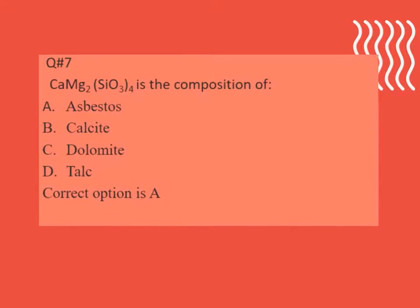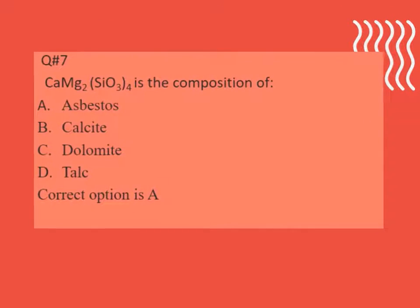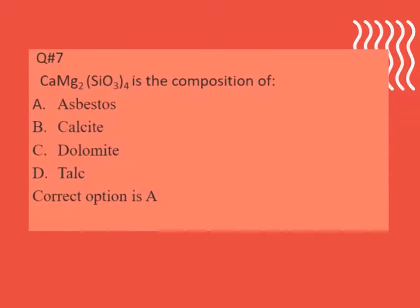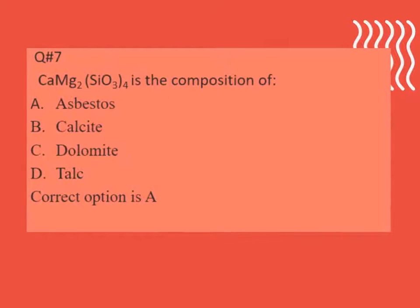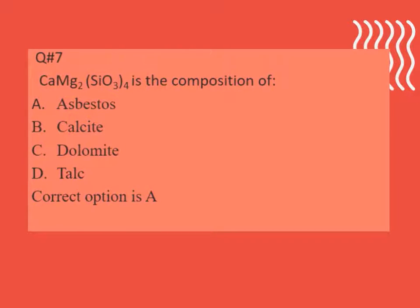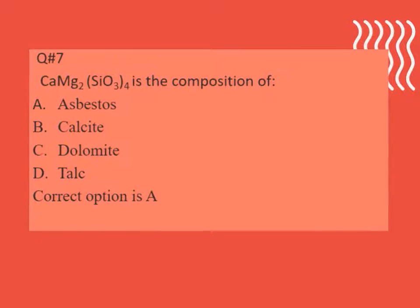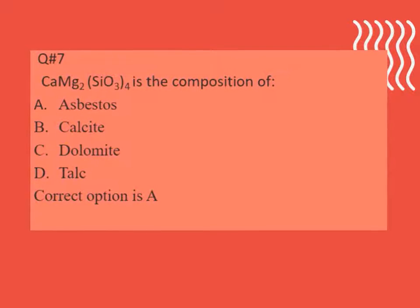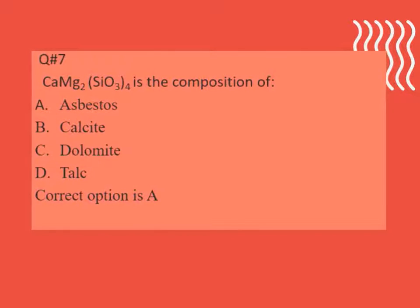Question number 7. CaMg2(SiO3)4 is the composition of: A. Asbestos. B. Calcite. C. Dolomite. D. Talc. Correct option is A.